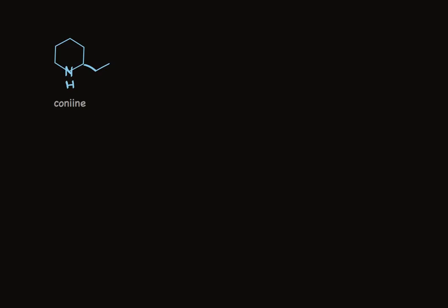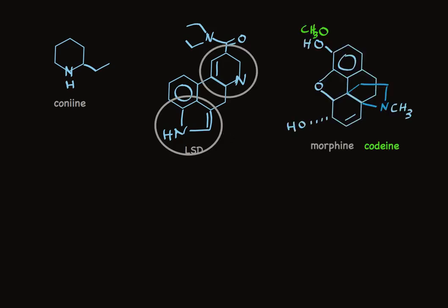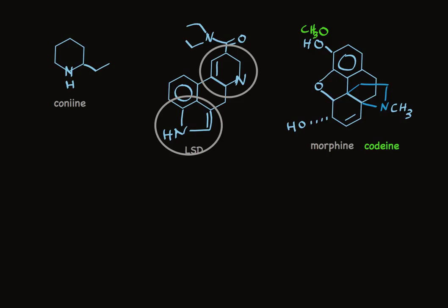Coniine is a simple heterocycle. It's found in hemlock extracts. It's the toxic component that causes death. LSD is a complicated compound that has two heterocyclic rings. There's a five-membered ring and a six-membered ring.